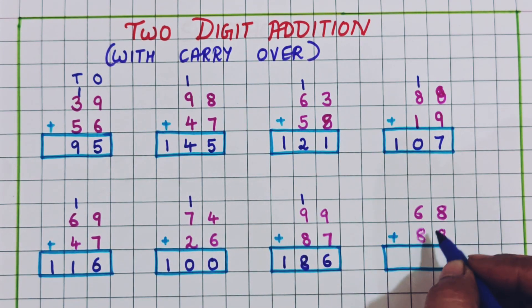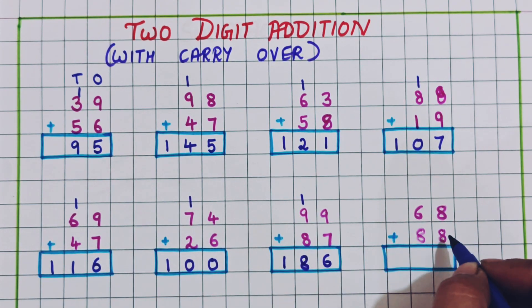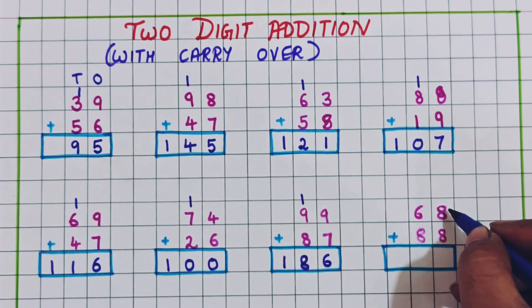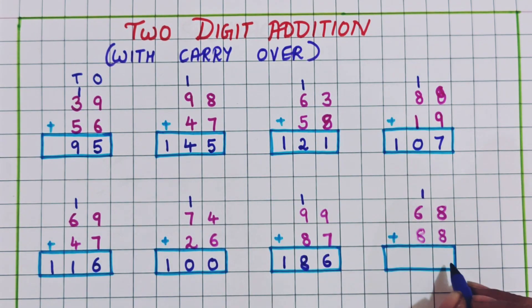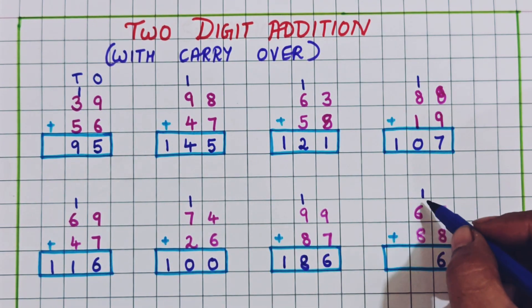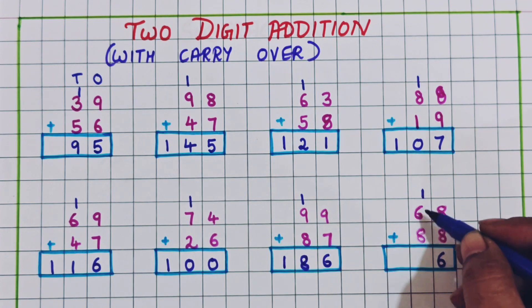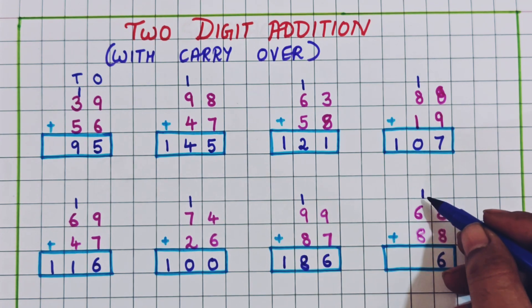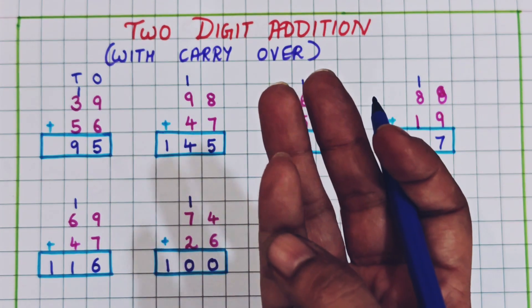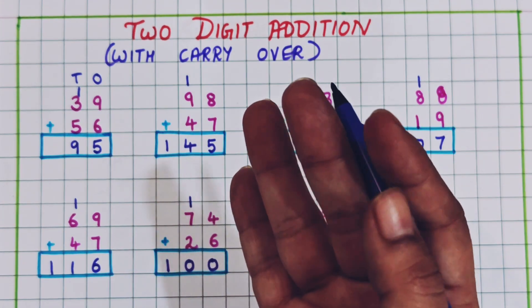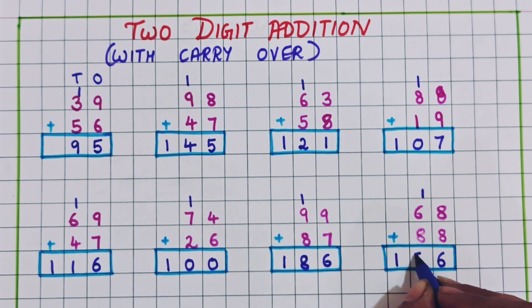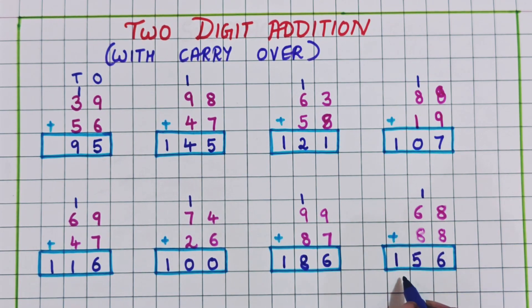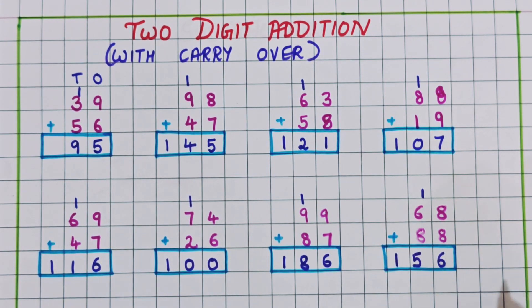Next: 68 plus 88. Now 8 plus 8 is 16, so I will write 1 here and 6 here. Now 8 plus 1 is 9, and 9 plus 6: 10, 11, 12, 13, 14, 15. So I will write 15 here. The answer is 156.